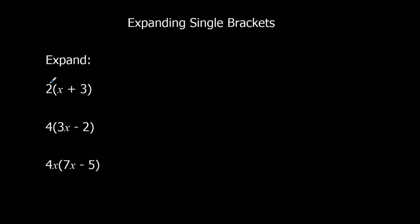So that means we're going to multiply 2 by the x, and we're going to multiply 2 by 3. So 2 times x, 2 times x we just write as 2x. And 2 times 3 makes 6, it's a positive 6, so plus 6.